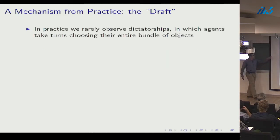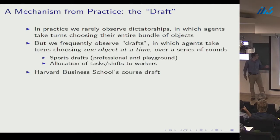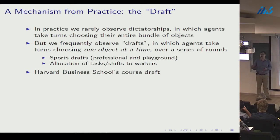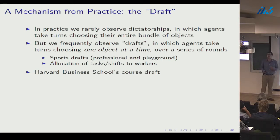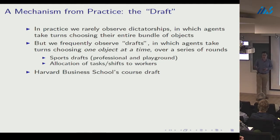In practice we rarely observe dictatorships where agents take turns choosing entire bundles; instead we frequently observe draft mechanisms where agents take turns choosing objects one at a time in a series of rounds. Examples include sports drafts for choosing players, and task or shift allocation to workers.